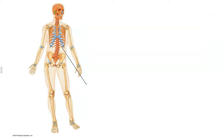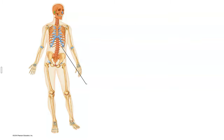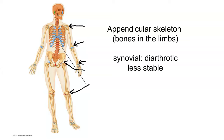One last observation: fibrous and cartilaginous joints are either immovable or slightly movable, and they are primarily located in the axial skeleton — the suture in the skull, the gomphosis as tooth and socket, the synchondrosis at rib to sternum, and the symphysis at the intervertebral discs or pubic symphysis. These joints are very stable. Synovial joints, by contrast, are found in the limbs of the appendicular skeleton. They are freely movable but less stable and more susceptible to injury.